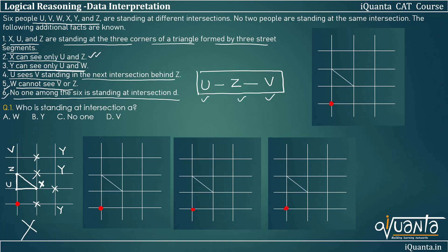Let us try another case. X, U, Z must be in a triangle, so let me place X here, Z here, U here. For X to see only U and Z, no one should be placed at the points along X's sight lines. Then, since U, Z, V must be in a straight line, V is placed beyond Z. Using the third condition, Y is placed at a position where he can see U, and W is placed so Y sees only U and W. However, checking the fifth condition — W cannot see V or Z — W is able to see V in this arrangement. So this case is also impossible and is eliminated.